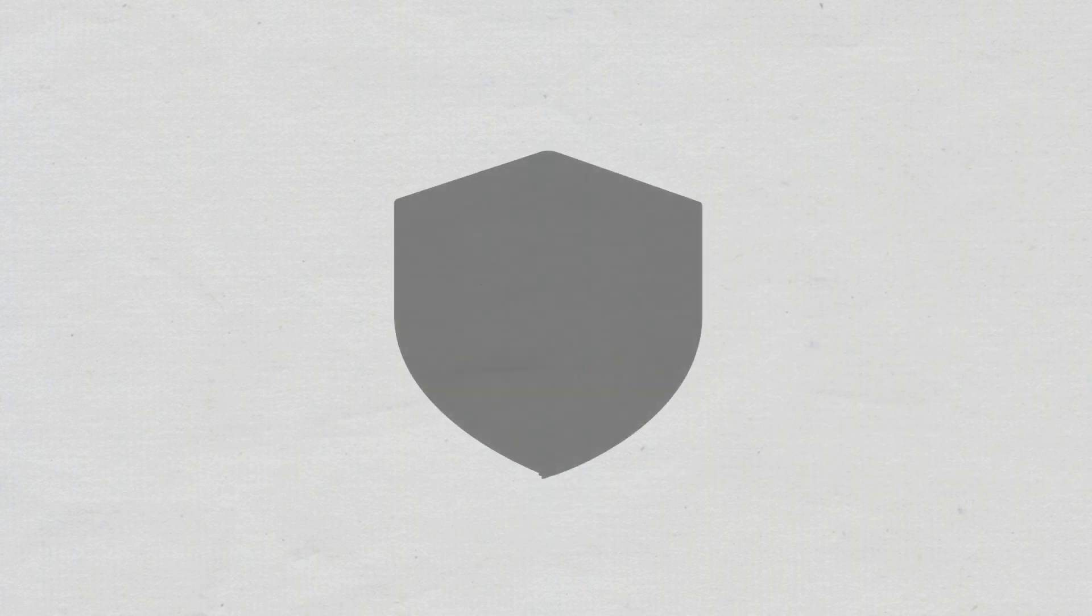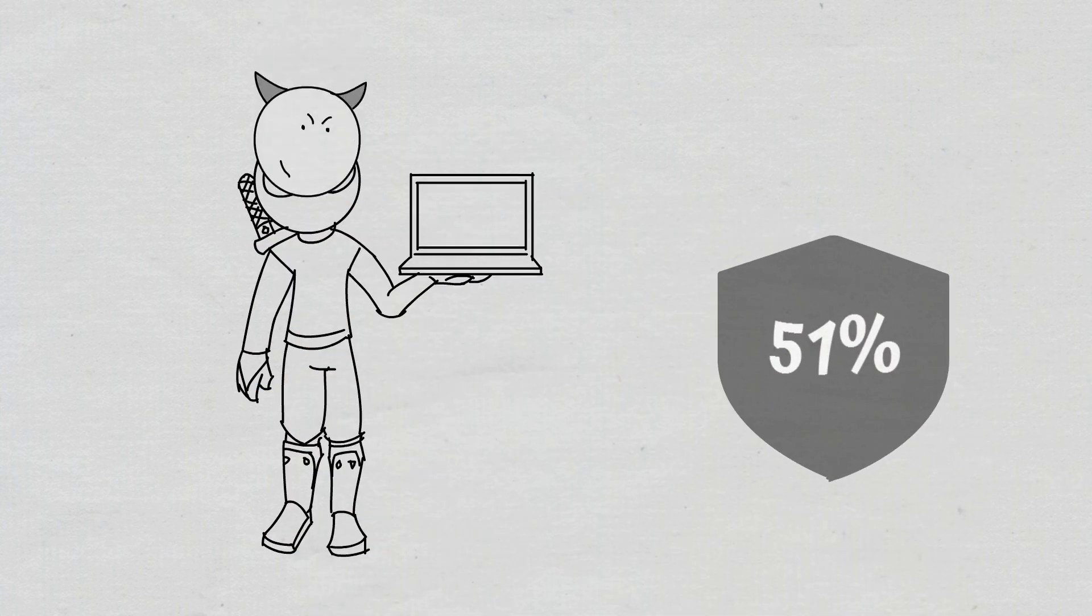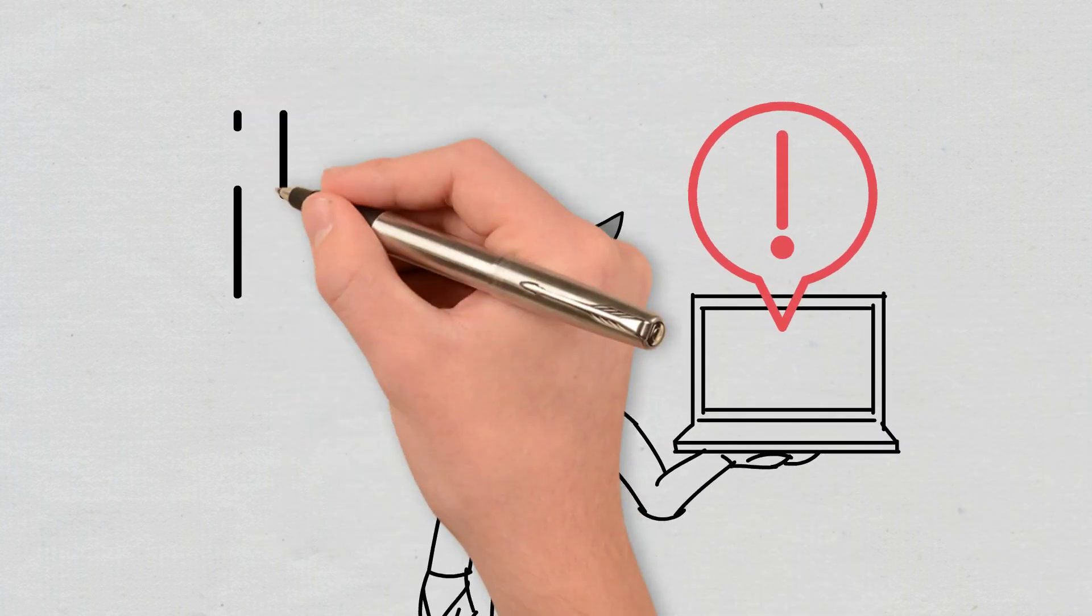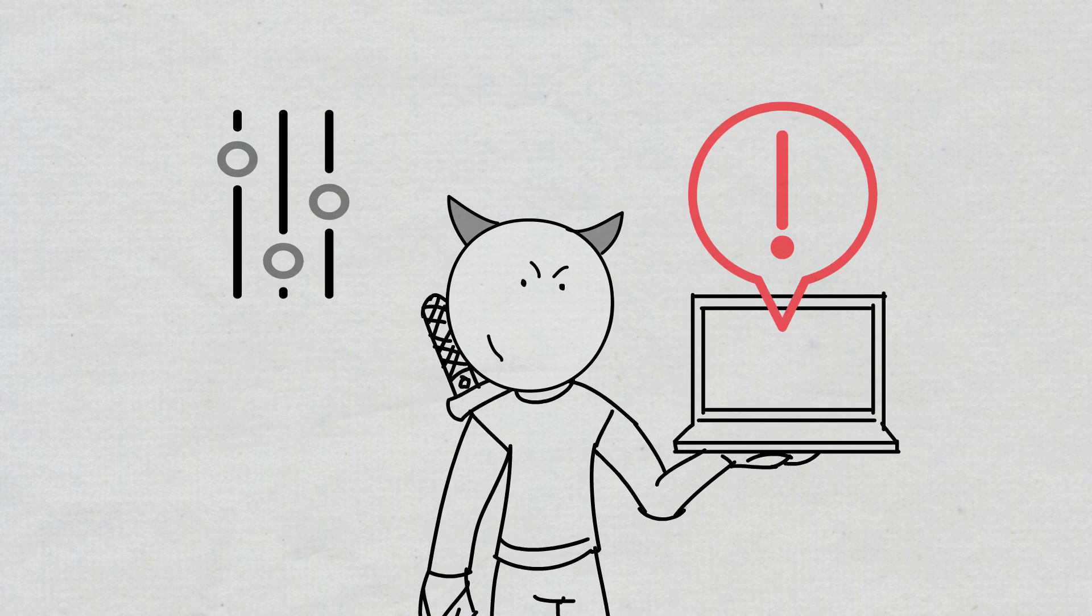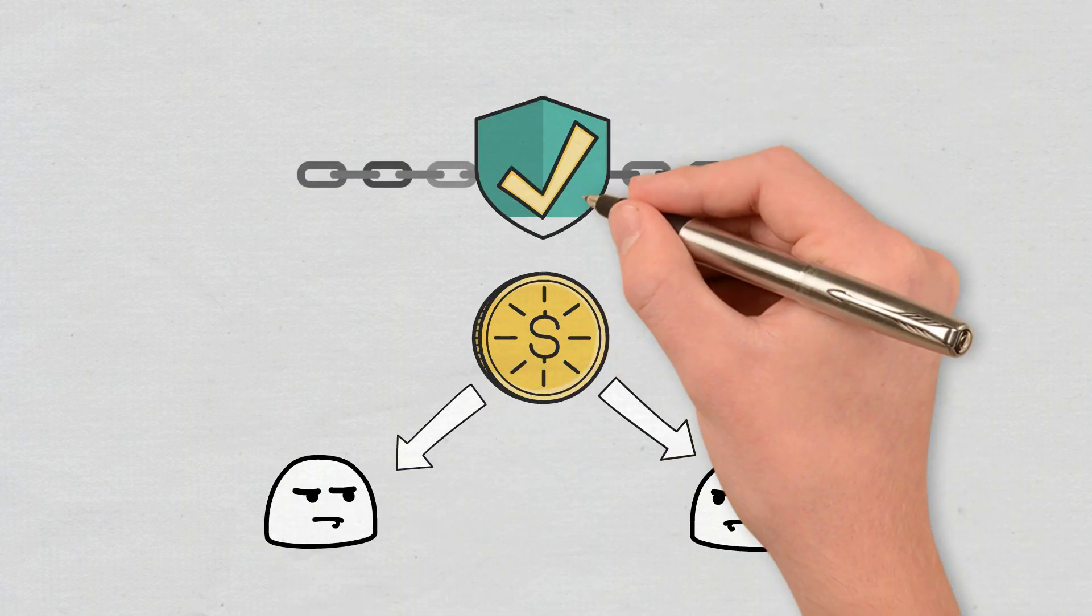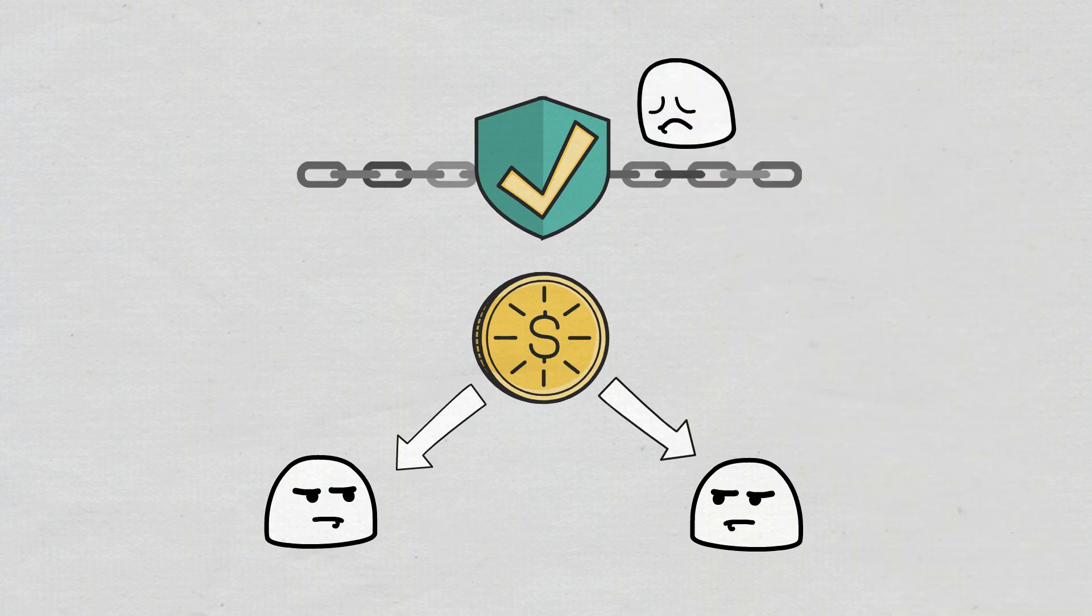For example, a 51% attack refers to when a bad actor has enough mining equipment to control more than 50% of the Hashrate of the blockchain. If one entity manages to control the majority of the Hashrate, they could block or reorganize transactions or even reverse the payments they've made themselves. This would create double spending issues, which in the end would totally undermine the integrity of the blockchain.